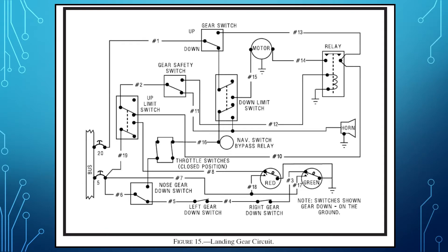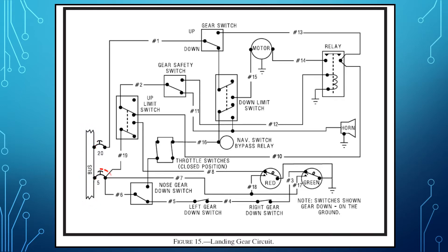Here we have a simplified version of an aircraft landing gear circuit schematic. It shows us how the pilot raises and lowers the landing gear and is helpful in troubleshooting the landing gear circuit. The various components of this circuit include the bus bar, from where the electrical power from the alternator and battery disseminates electrical power to the various electrical systems in the aircraft.